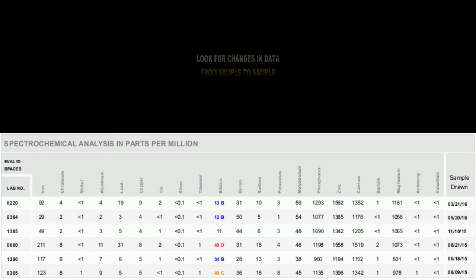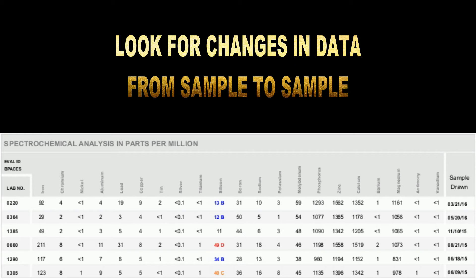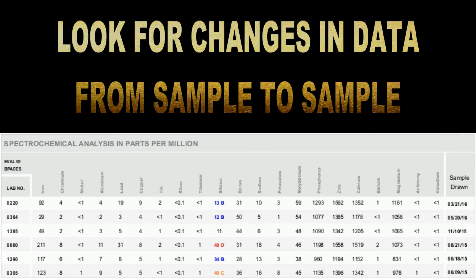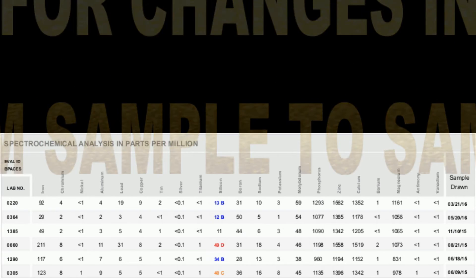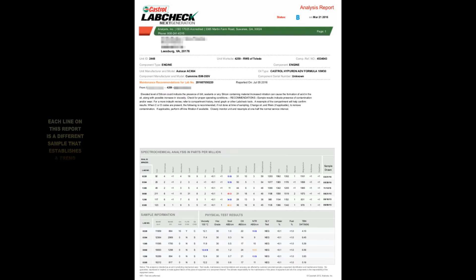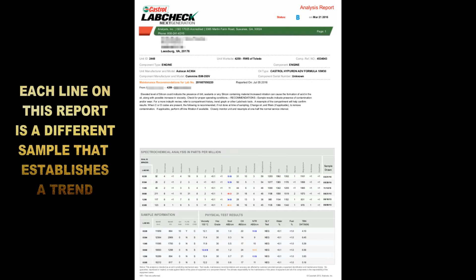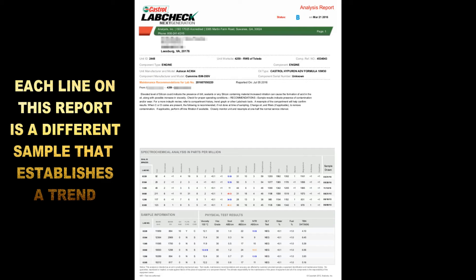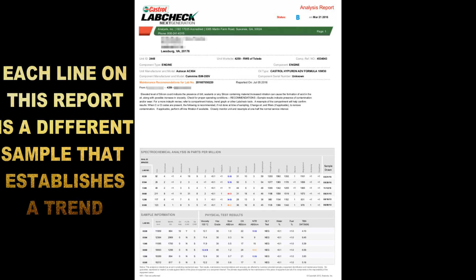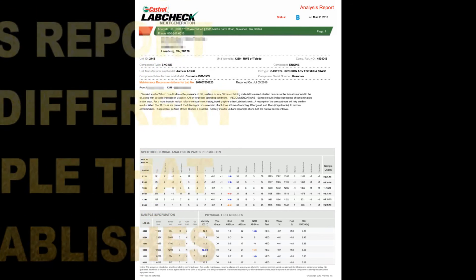Any unusual fluctuations in the report's values can indicate a problem which can be addressed before a failure of a component occurs. Though there are many ways to interpret scientific data, using a trend type analysis is arguably one of the most effective at predicting future problems.